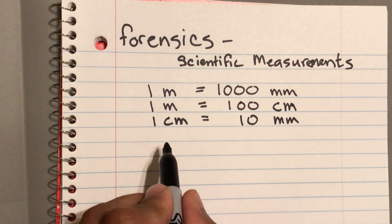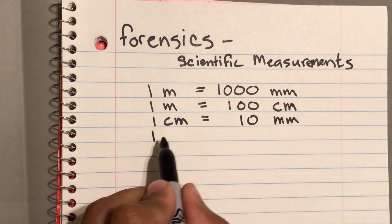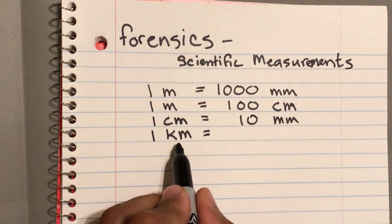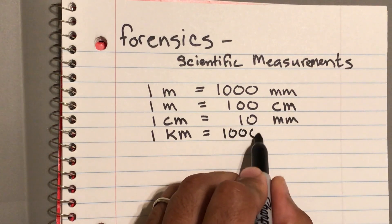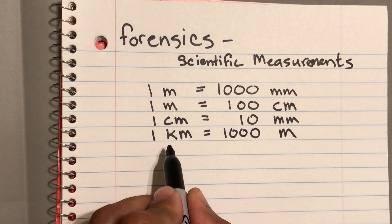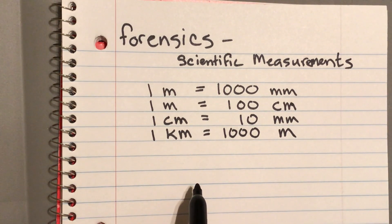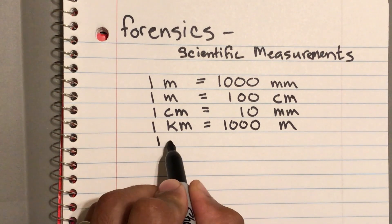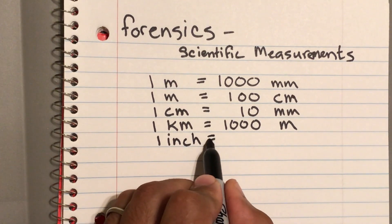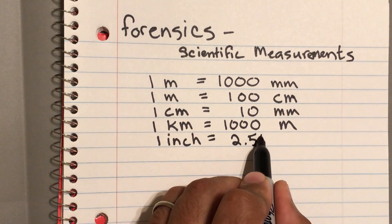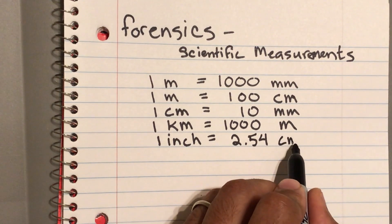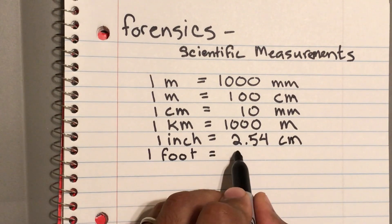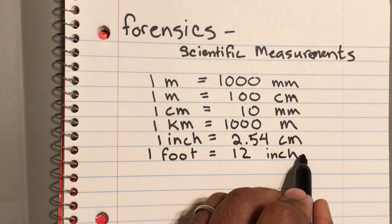There are ten millimeters in a single centimeter. One kilometer — 'kilo' also means a thousand, just like 'milli' means a thousand — so there are one thousand meters in a single kilometer. For the standard system, one inch is equal to 2.54 centimeters, and in one foot there are twelve inches.